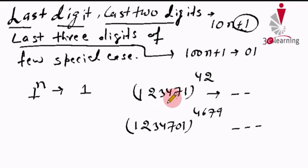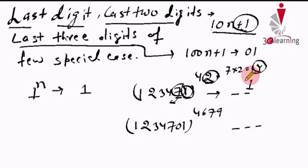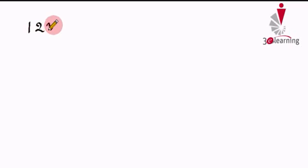If you have 1 as the last digit and are looking for the last two digits, this is the 10n+1 form — like 70+1. When you have 1 as the last digit, the last digit is always 1 for any power. For the second last digit, take the second last digit of the base and multiply by the last digit of the power: 7 × 2 = 14, take the last digit, giving 41. So 123471^42 has last two digits 41. This can be derived from the binomial theorem.